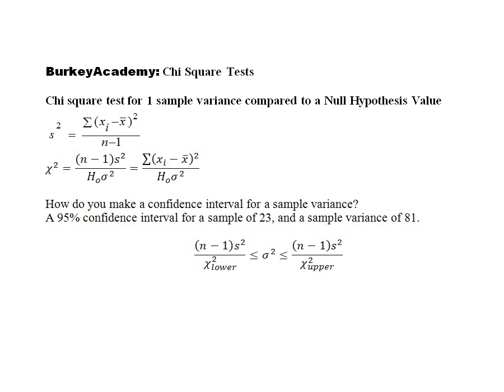This is a short addendum to my video on chi-squared tests. Sometimes you might want to know how to make a confidence interval if you have something that you know has a chi-squared distribution.